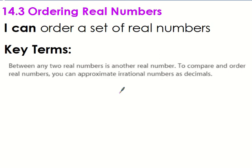We're going to be putting numbers in order, but they're going to be all sorts of numbers we've been dealing with. The main point is that between any two real numbers is another real number. Between one and two are all these decimals, and between one-tenth and two-tenths are smaller tenths or hundredths. To compare and order real numbers, most of the time we have to approximate irrational numbers as decimals so that we can compare them.